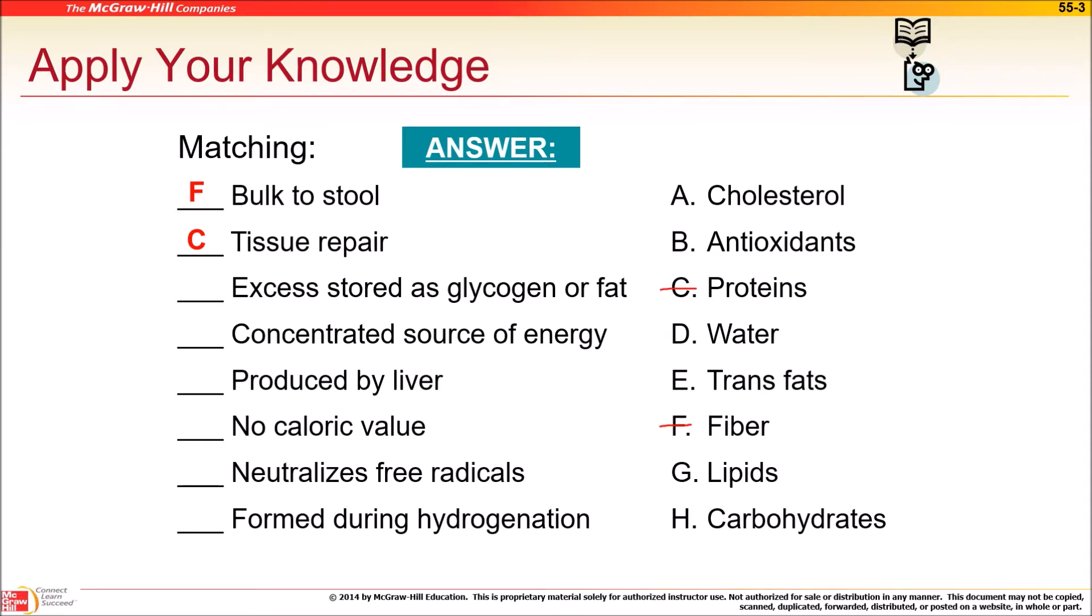Excess stored as glycogen or fat. This is stored in the liver. What is converted into glycogen or fat? Carbohydrates, very good. Sugar is converted and stored in the liver, kind of like starch but in the liver, and then of course fat. Concentrated source of energy. What has the highest amount of calories per gram? Lipids are just fats, about nine calories per gram. Produced by the liver.